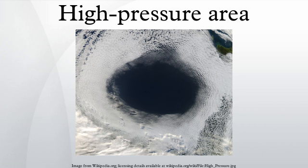High-pressure systems form due to downward motion through the troposphere, the atmospheric layer where weather occurs. Preferred areas within a synoptic flow pattern in higher levels of the troposphere are beneath the western side of troughs. On weather maps, these areas show converging winds, also known as confluence, or converging height lines near or above the level of non-divergence, which is near the 500 hectopascals pressure surface about midway up through the troposphere and about half the atmospheric pressure at the surface. High-pressure systems are alternatively referred to as anticyclones. On English-language weather maps, high-pressure centers are identified by the letter H, within the isobar with the highest pressure value. On constant-pressure upper-level charts, it is located within the highest height line contour.